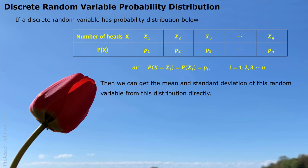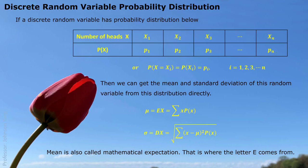If a discrete random variable has a probability distribution like this, we can also calculate the average value and the standard deviation using all the information in the table. The mean, written as mu or E(x) — where capital E represents expectation — is also called the mathematical expectation. The calculation uses every possible value multiplied by its corresponding probability, and all the products are added together. We can also calculate the standard deviation, represented by capital D.